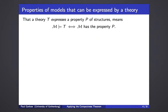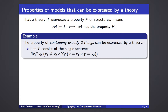Let's now look at properties of models that can be expressed by a theory. Recall: T expresses property P means that for every structure M, M models T if and only if M has property P. The first example is the property of containing exactly two things. This property is expressed by a theory consisting of just one single sentence, as written here. Please pause and verify that if M is a model of this theory it must have exactly two things, and conversely, that if M contains exactly two things it satisfies this sentence.